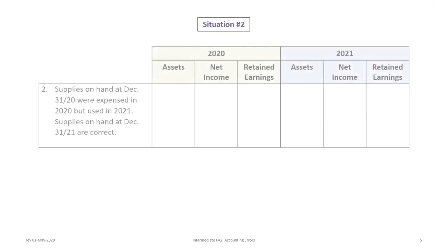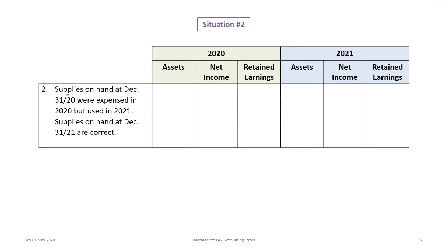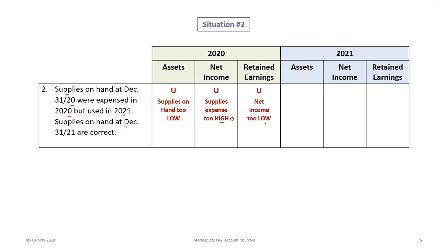Second situation: supplies on hand at December 31st, 2020 were expensed in 2020 but used in 2021, and supplies on hand at December 31st, 2021 are correct. For 2020, assets are understated because the supplies on hand were expensed when they shouldn't have been. The supplies expense is overstated, net income is understated, and therefore retained earnings are understated.